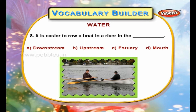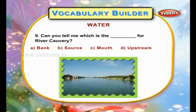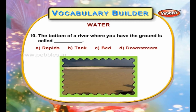It is easier to row a boat in a river in the downstream. Can you tell me which is the source for river Cauvery? The bottom of a river where you have the ground is called a bed.